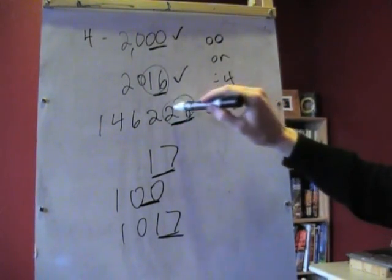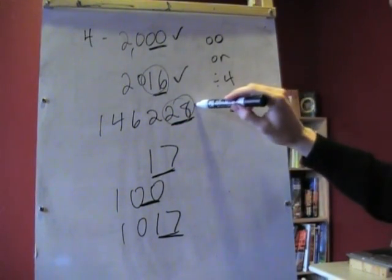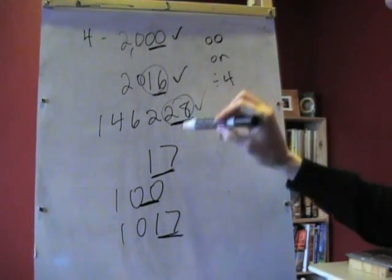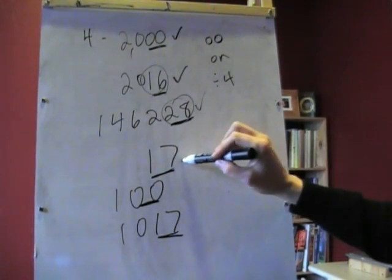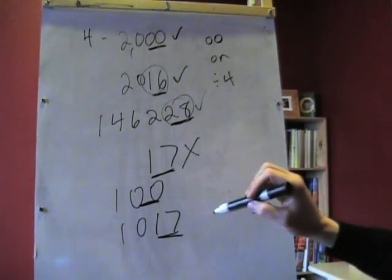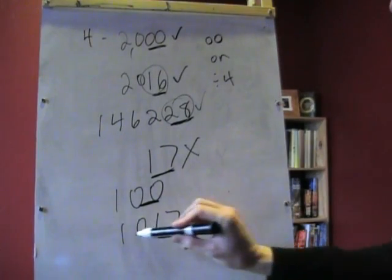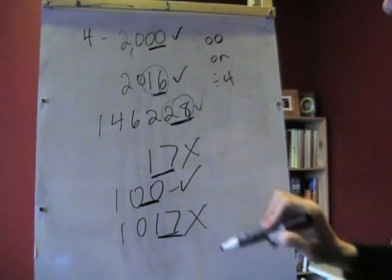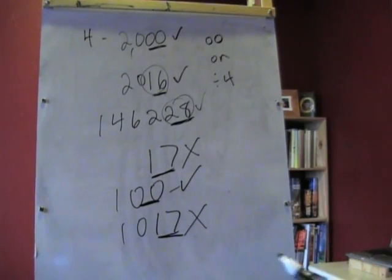146228 is, again, divisible by 4 because 28 is divisible by 4. 17 is not a multiple of 4. You can't divide 17 evenly into 4, so that means that that number is not, or any other number that ends in 17. 100, however, is divisible by 4 because it has the double zeros at the end. So that's our trick with the number 4.